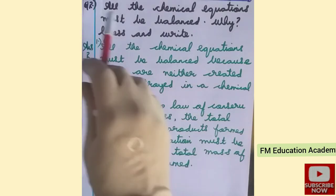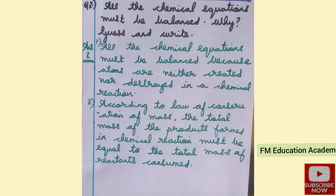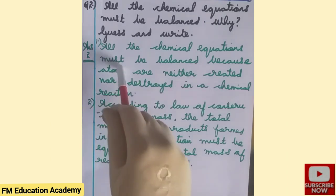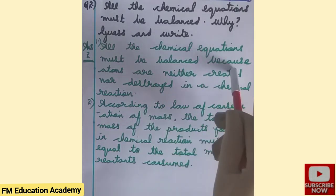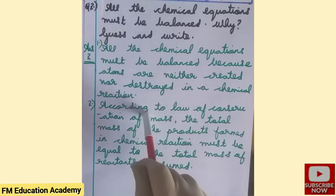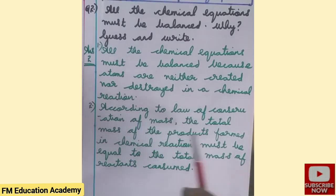Second question: all chemical equations must be balanced — why? In a chemical reaction, reactants form products. The atoms on the reactant side and the product side must be equal for the equation to be balanced. All chemical equations must be balanced because atoms are neither created nor destroyed in a chemical reaction. According to the law of conservation of mass, the total mass of the products must equal the total mass of reactants consumed.